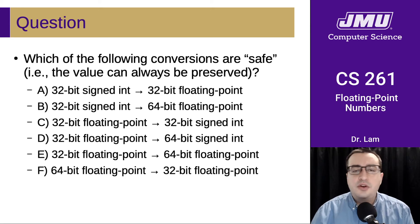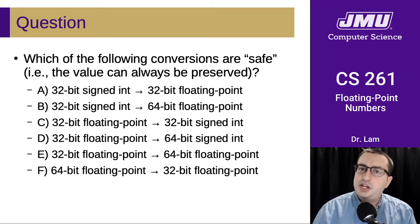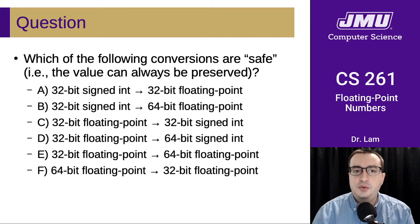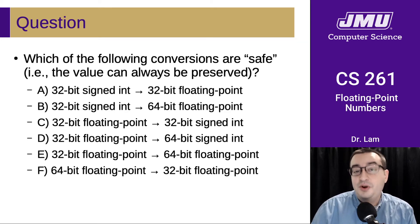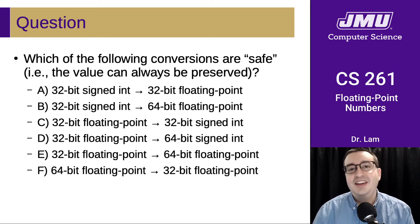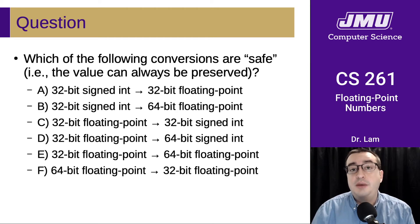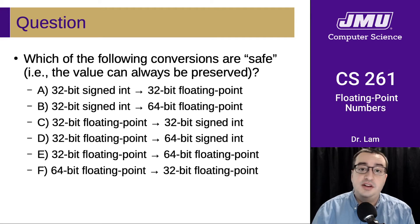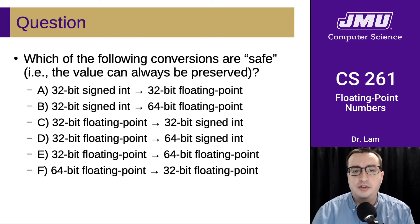It turns out that B is actually safe. If you were wrong on this one, that's fine — the intuition is okay. It turns out that with a 64-bit floating-point number, you actually have more than 32 bits for the significand. So you can actually store all 32-bit integers in the 64-bit significand field. That's actually safe, even though it may be a little counterintuitive.